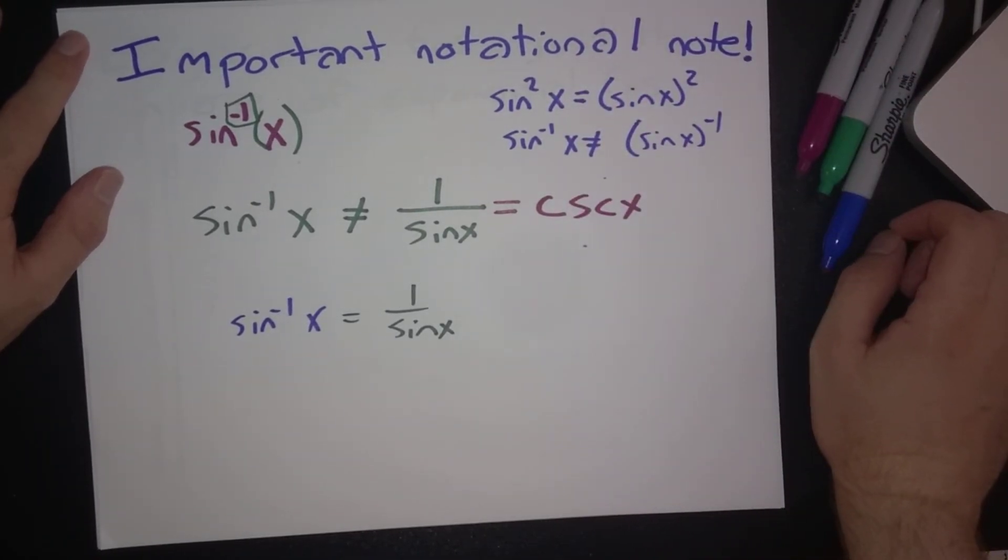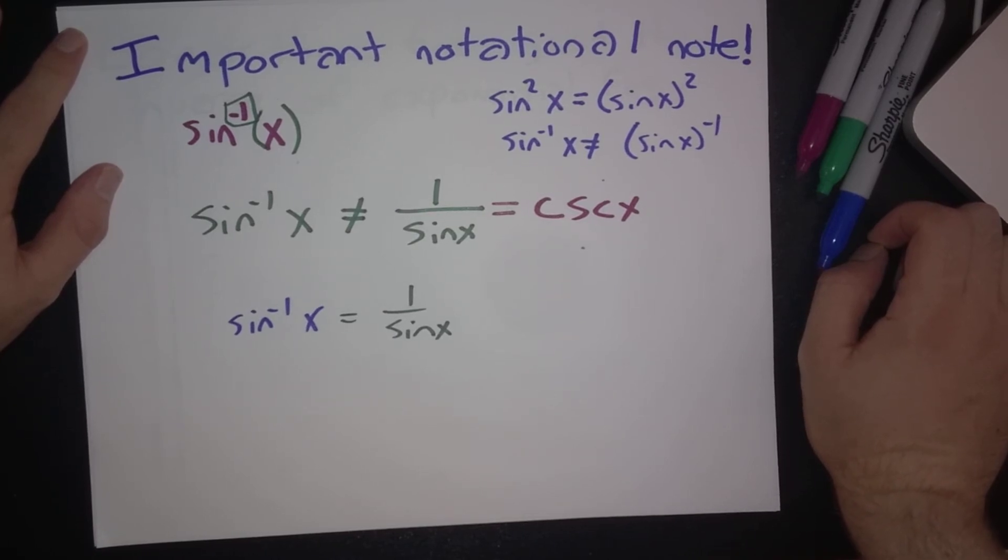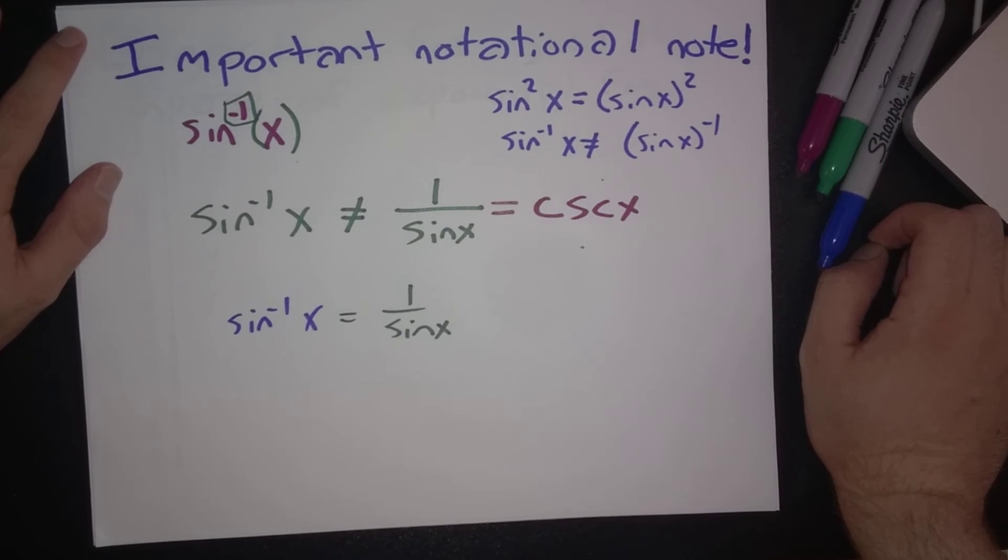It's a mistake that wrecks the whole problem, and they're basically guaranteed zeros on that problem because there's nothing really worth saving at that point.